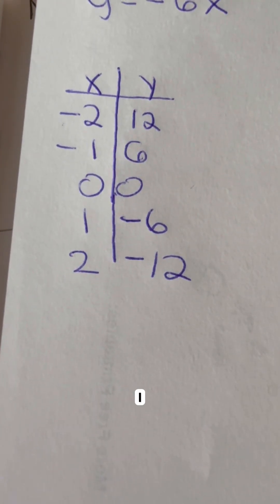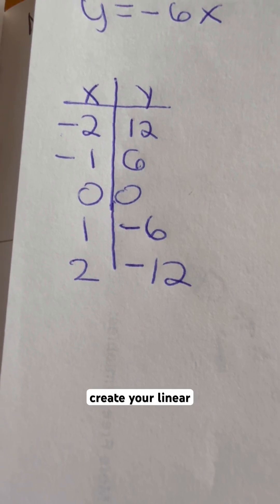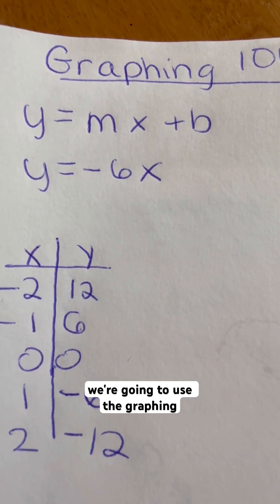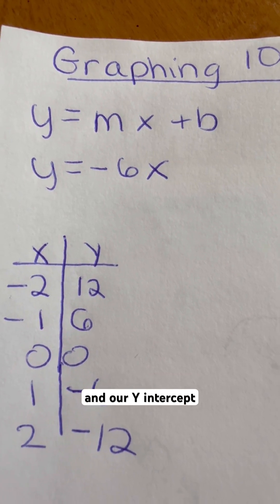We have a bunch of points that we could plot at this point. You can plot all of those points and create your linear graph. Or we're going to use the graphing method, which means we're going to plug in our numbers as our slope and our y-intercept.